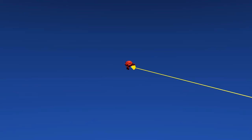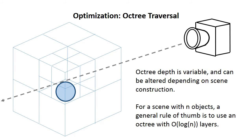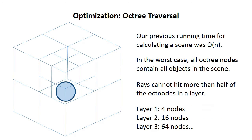One of the nice things about octrees is that their depth is variable, and we can alter it depending on scene construction. As a general rule of thumb, we try to use an octree with roughly O of log N layers. Our previous running time for calculating scenes was O of N, and in the worst case, octrees don't help us at all. The nice thing is that rays can't hit more than half of the oct nodes in a layer at a given time, which means that on the first layer we can hit at most four nodes, then at most 16, then at most 64, which gives us a sum that looks like this.